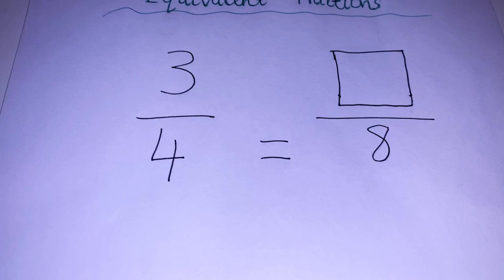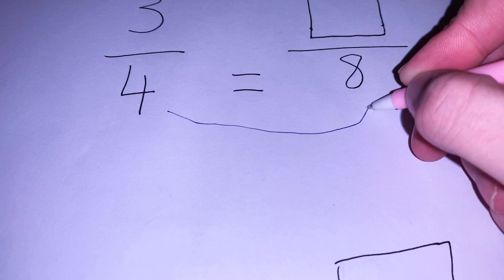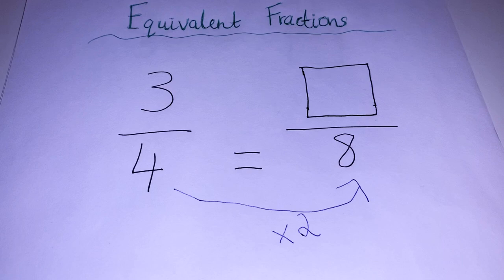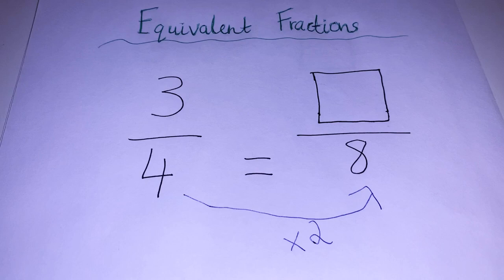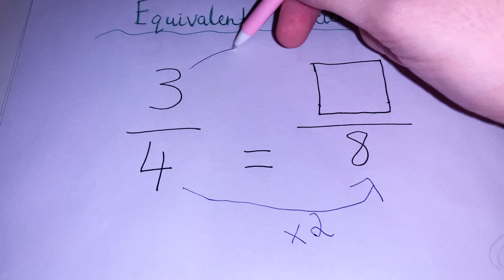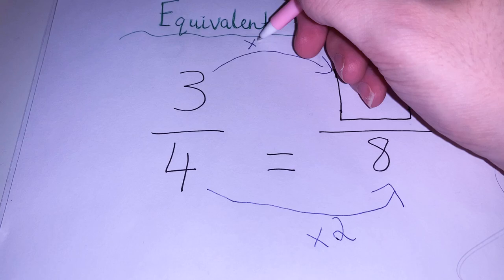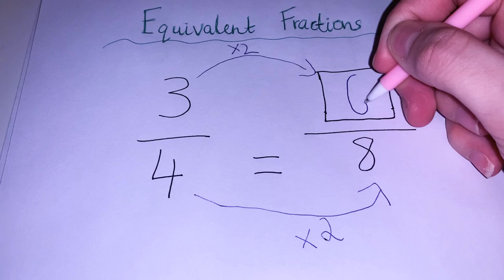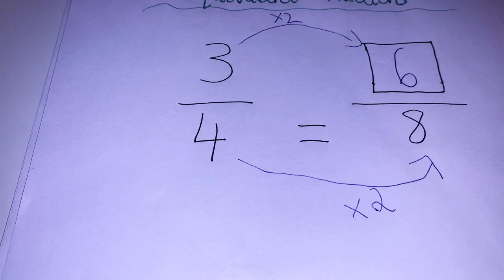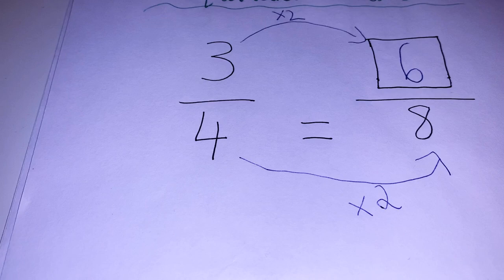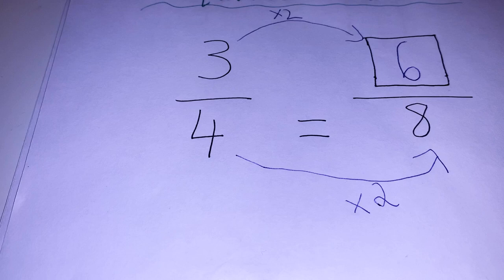If my denominator here is four, and my denominator here is eight, I can get my denominator of eight by multiplying by two — because four multiplied by two gives me eight. And remember, whatever I do to the bottom, I do to the top. So I'm also going to multiply my numerator by two. Three multiplied by two gives me six eighths. So three quarters is equal to six eighths — they are equivalent fractions.